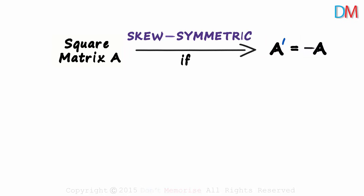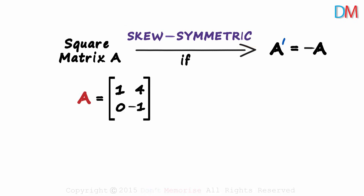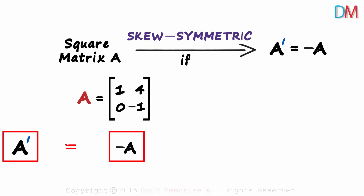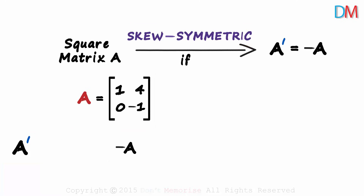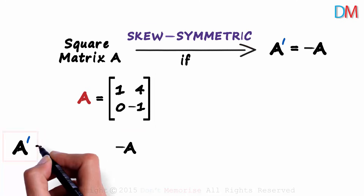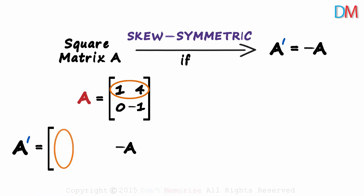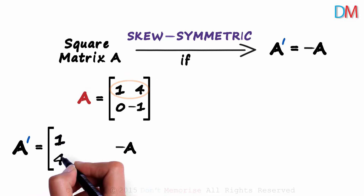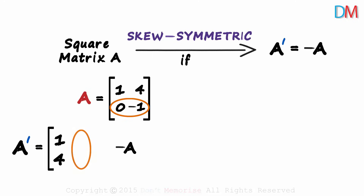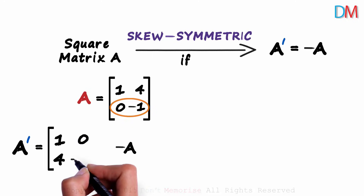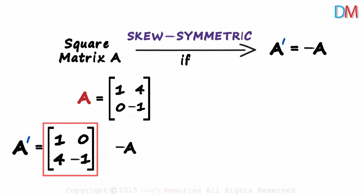A simple example will help us understand better. Is this matrix A skew symmetric? We will find A transpose first and then negative A. If they are equal, we can say that matrix A is skew symmetric. For A transpose, the first row becomes the first column: 1, 4 — and the second row becomes the second column: 0, minus 1. This is A transpose.